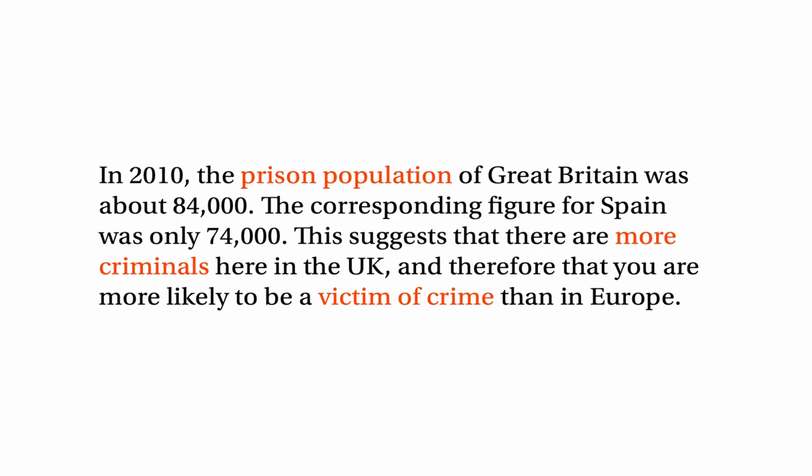The first thing you might have noticed is that the evidence is about the prison population of Great Britain, and that's used to support a statement about the number of criminals in the UK and a further conclusion that you're more likely to be a victim of crime here than in Europe. Now this doesn't work. Just because the prison population is higher in Great Britain than in Spain doesn't mean there are more criminals here in the UK. It could be that in the UK they're more effective at catching criminals, so a higher proportion of people who commit crime end up in prison. Or it could be that we have a different criminal justice system, which means judges are more likely to hand down a custodial sentence to somebody convicted of a crime, so a higher proportion of convicted people end up in prison in the UK than in Spain.